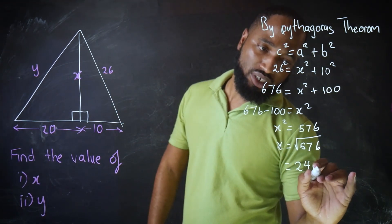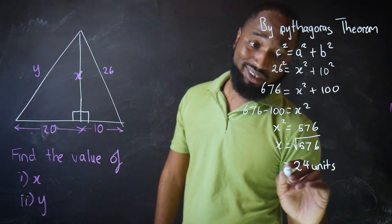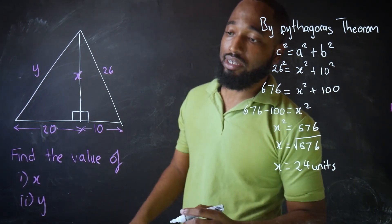Since there are no units, we can just put units. X equals 24 units. Let's find Y.